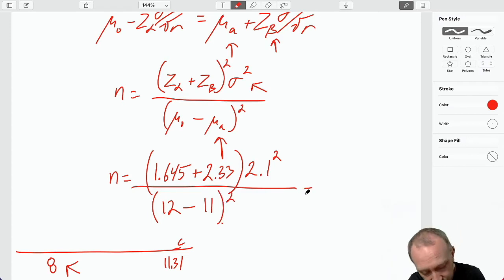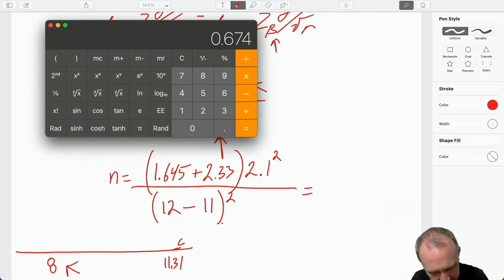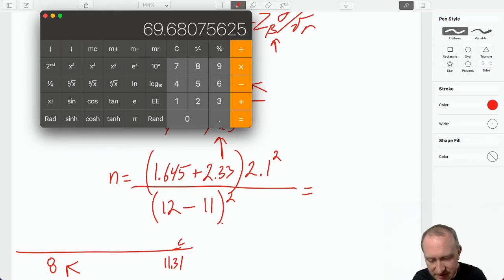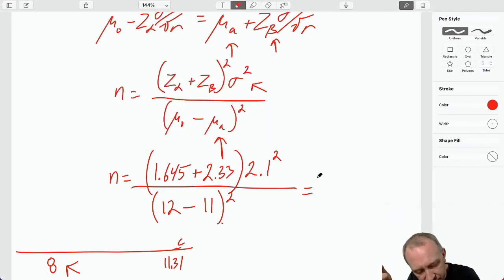Good. So, now we just pull out our calculator. And here I'm going to have, we better get some brackets here. 1.645 plus 2.33. And that's squared times 2.1 squared equals 69 divided by, well, that's just divided by 1 squared. So, that's just 1. So, there's our answer 69.68. Now, we can't have a sample size that is a fraction of a number. So, we'll just round this to 70.